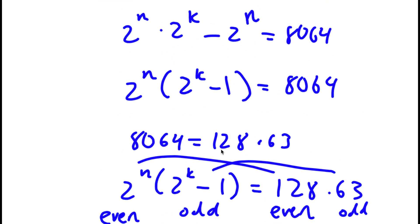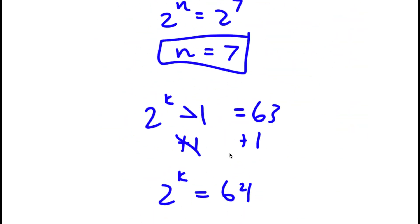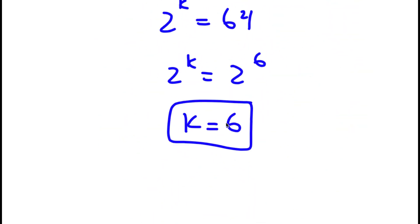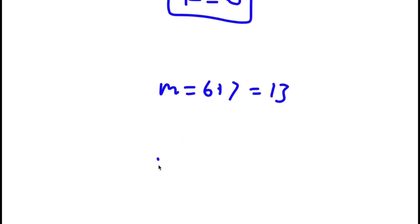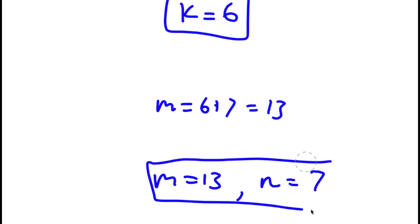Remember that m equals n plus k. With n equals 7 and k equals 6, m equals 6 plus 7, which is 13. So m equals 13 and n equals 7. These are my solutions.